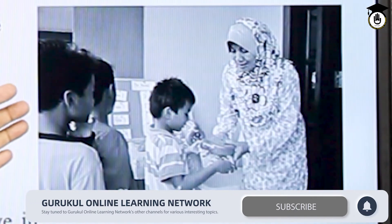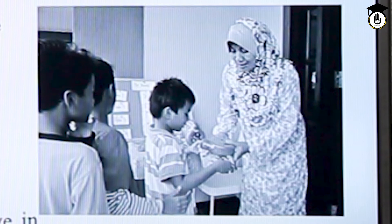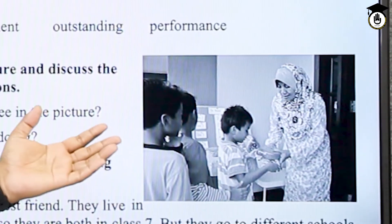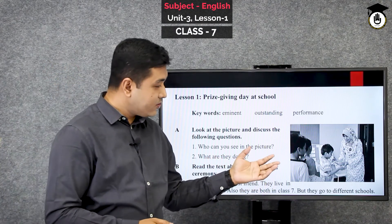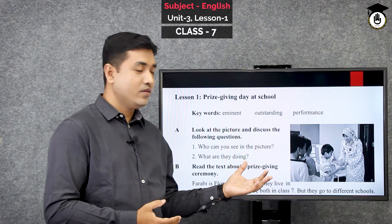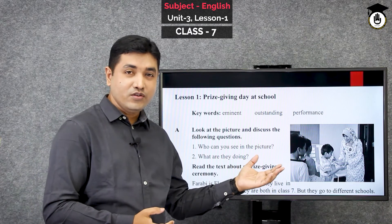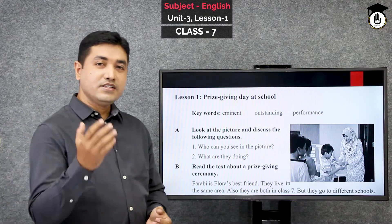There is a picture in the text. Can you guess the situation or the location of the picture? Is it in a classroom or somewhere else? In this picture we can see a teacher and some students. What are they doing — are the students reading, dancing, or playing? No, the students are receiving something from the teacher. Now let us start the text.